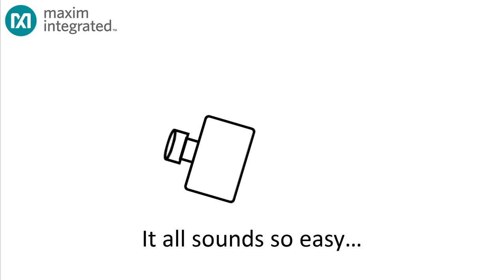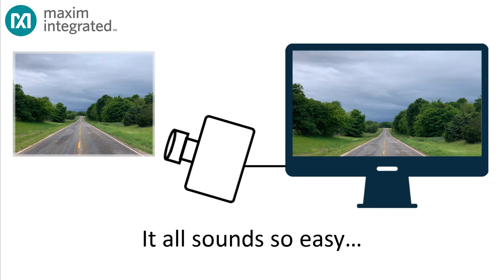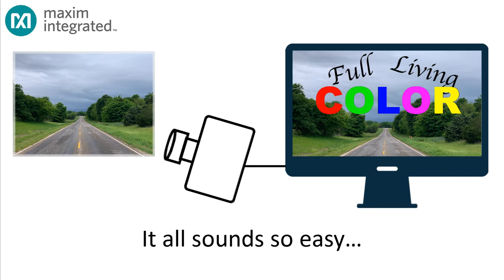It all sounds so easy. A camera scans a scene and transmits the result to a display. The display reflects everything the camera sees in full living color. Would that it were so easy.